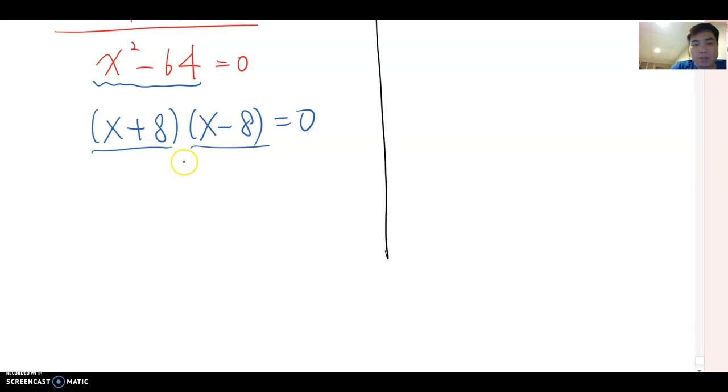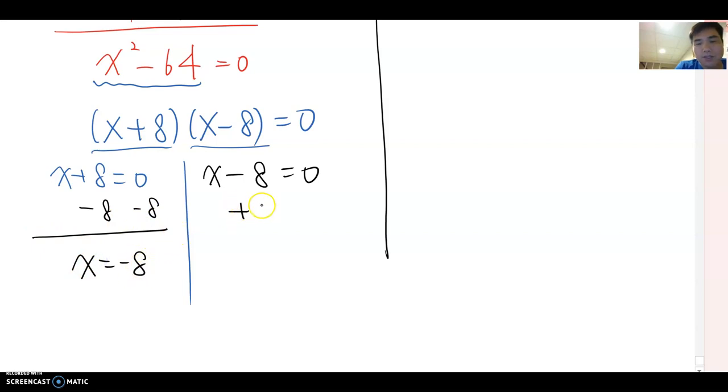Therefore, we set up x plus 8 equals 0 and the other side, we can make x minus 8 equals 0. And solve for x. If you move this constant to the other side, then x can be negative 8. And in this side, plus 8, and x equals 8. Therefore, the answer becomes x equals negative 8 or x equals 8.